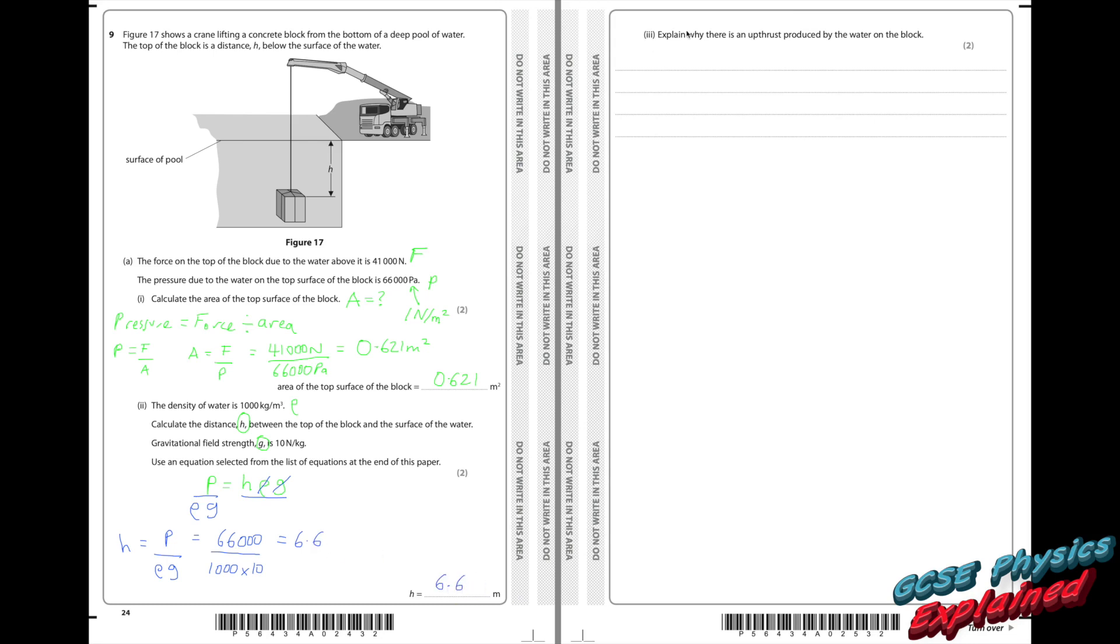Part 3. Explain why there is an upthrust produced by the water on the block. Right. You'll always get an upthrust when you've displaced water. The upthrust is equal to the weight of the water that you've displaced. So that would be an easy way of getting two marks. But the thing is, you might not understand what that means. Again, if you haven't had a look at my video, click the link above. It might make it clearer for you. If you want a more in-depth discussion of this.